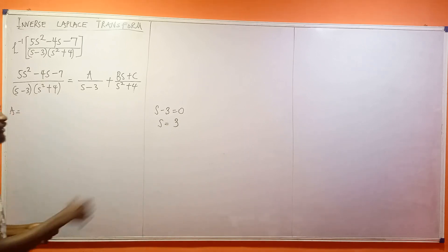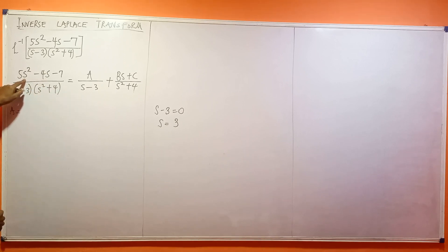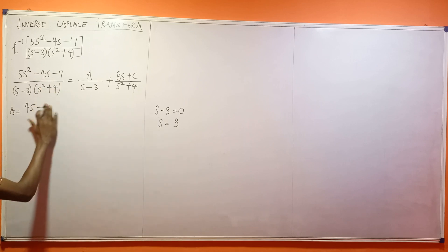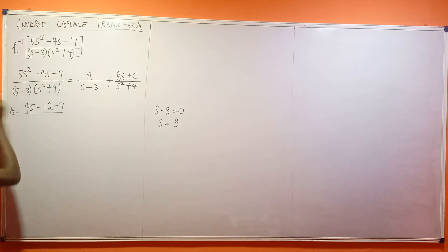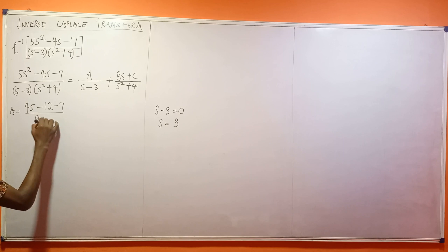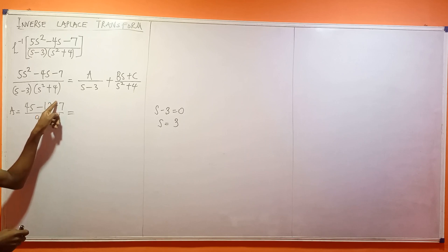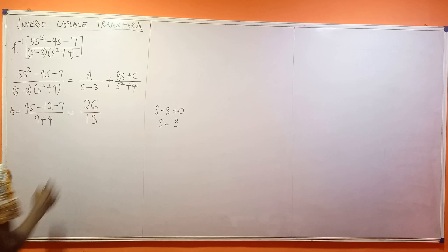It therefore means s equals 3. So anywhere I see s, I'm going to put 3. So what is 3 squared? That's 9. 9 times 5 is 45, minus 4 times 3 which gives 12, then minus 7. The denominator: I cover up the (s minus 3) using the cover-up rule, so I work with (s² plus 4), which gives 9 plus 4 equals 13. So 45 minus 12 is 33, minus 7 is 26, divided by 13, gives A equal to 2.